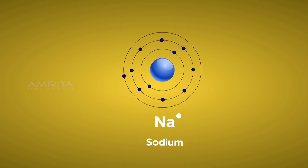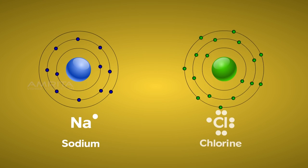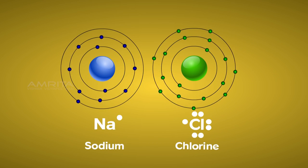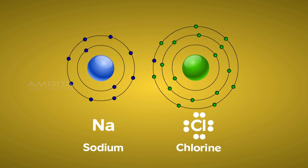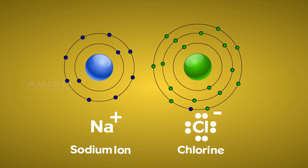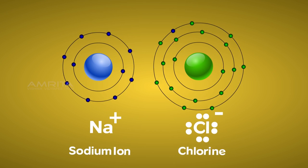Sodium atom has one electron in its valence shell and chlorine atom has seven electrons in its valence shell. When these atoms collide with each other, the sodium atom loses its valence electron and becomes a positively charged sodium ion, attaining a stable octet configuration.